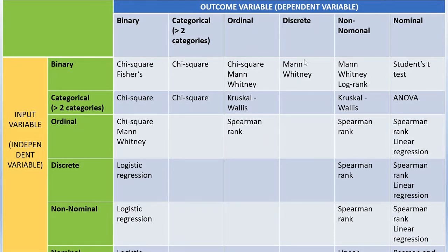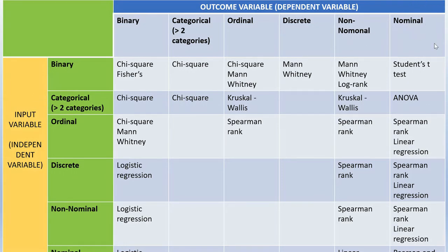For discrete versus binary, we can use Mann-Whitney. For nominal versus binary, you can use a Student t-test — there are one-sample and two-sample t-tests, which we shall look at in our next videos. For nominal versus two or more categories, we can use analysis of variance — ANOVA — including one-way ANOVA and two-way ANOVA, covered in coming videos. For nominal versus ordinal, we can use a Spearman rank or linear regression. Linear regression applies across many input-outcome combinations with a nominal outcome.